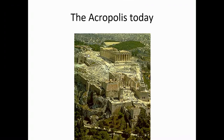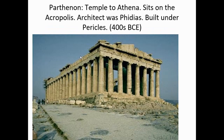The Acropolis is what it looks like today. You enter through the Propylaia. On your right is the Parthenon, heavily damaged about 200 years ago, and on the left you can see the Erechtheum. The architect was Phidias, and it was built under the great leader Pericles in the 400s BCE. Phidias is famous not only for the sculptural program of the Parthenon but also for one of the seven ancient wonders of the world.